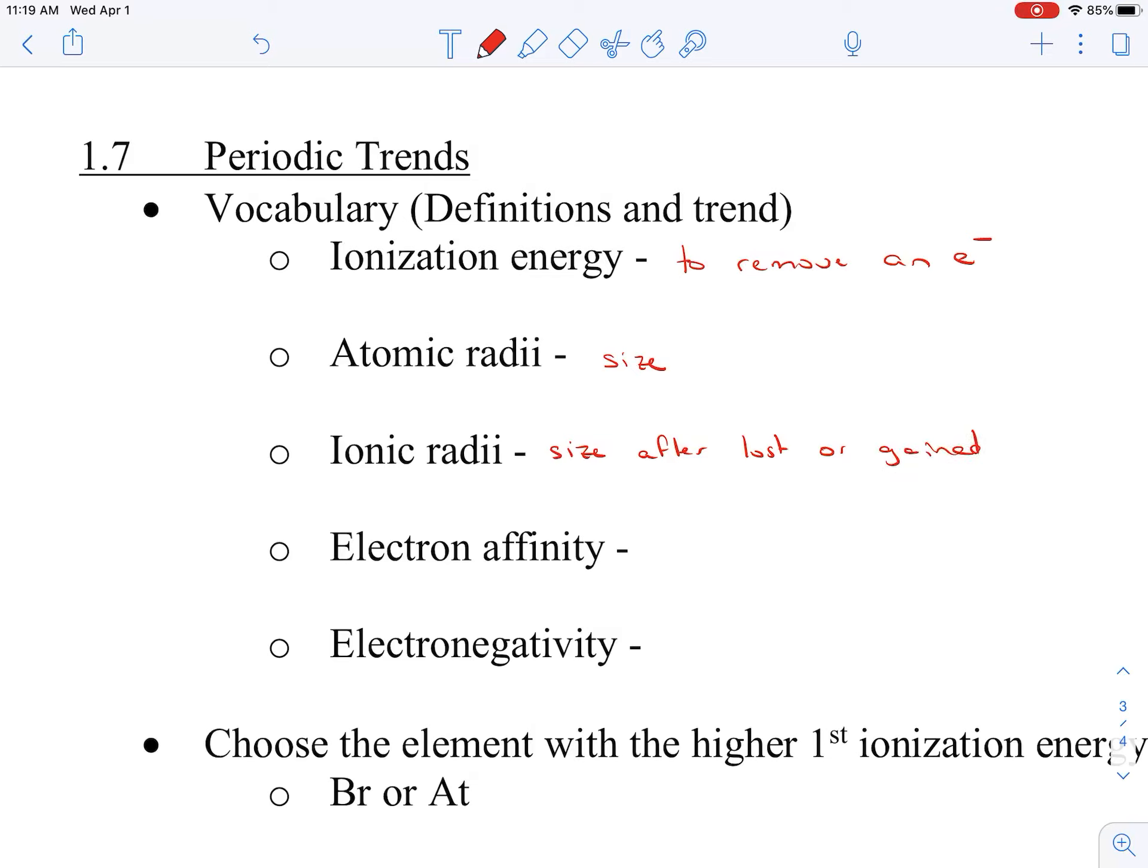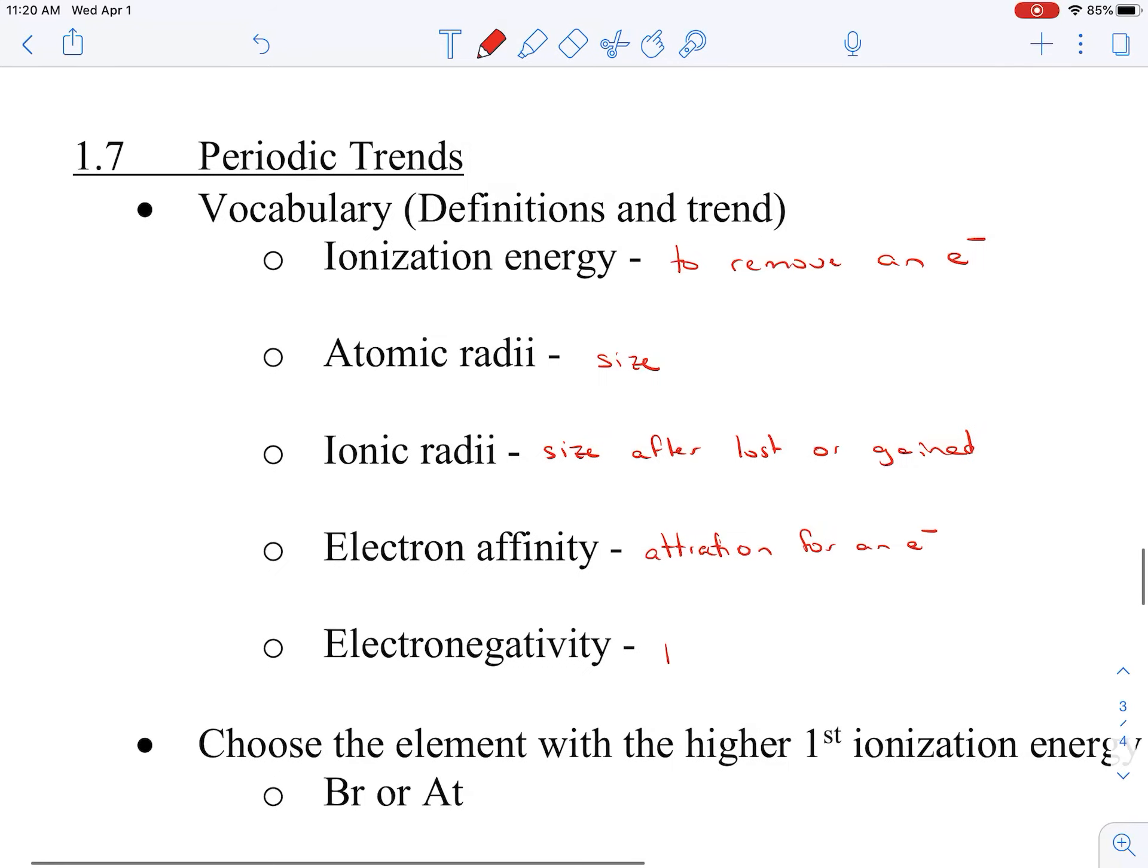Electron affinity is the attraction for an electron, and then electronegativity is the ability to attract an electron once it's bonded. So attracting, pulling an electron to itself.